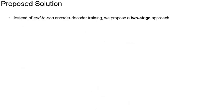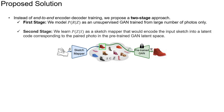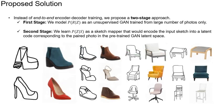To overcome the issue of end-to-end encoder-decoder training, we propose a two-stage approach. In the first stage, we model the decoder as an unsupervised GAN trained on a large number of unlabeled photos, capable of generating realistic images. Once the GAN is trained, in the second stage we keep the generator fixed and learn a sketch mapper that encodes the input sketch into a latent code Z corresponding to the paired photo in the pre-trained GAN latent space. With this two-stage approach, our model generates highly realistic images even from very abstract freehand sketches.